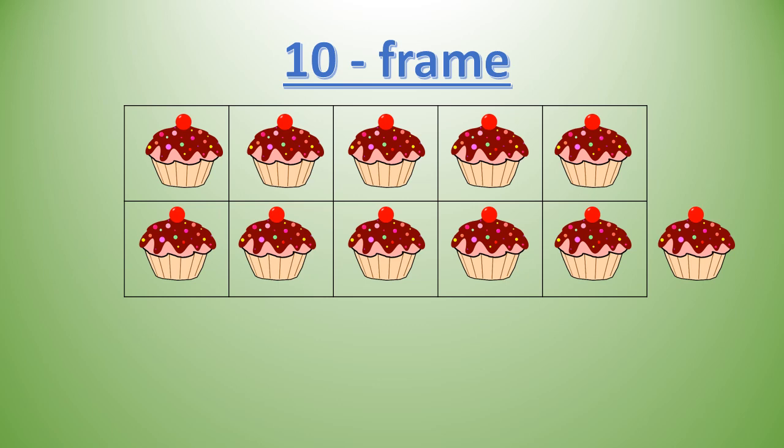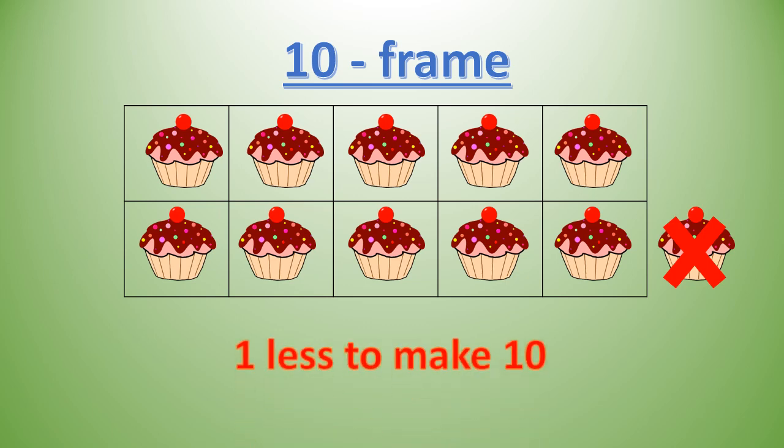See the next example. How many cupcakes are there? 1, 2, 3, 4, 5, 6, 7, 8, 9, 10, 11. There are 11 cupcakes. How many more or less are needed to make 10? The number of cupcakes is more than 10, so we cross out or take away the extra cupcakes which are outside the 10 frame. We have to take away 1. We can say 1 less to make 10.